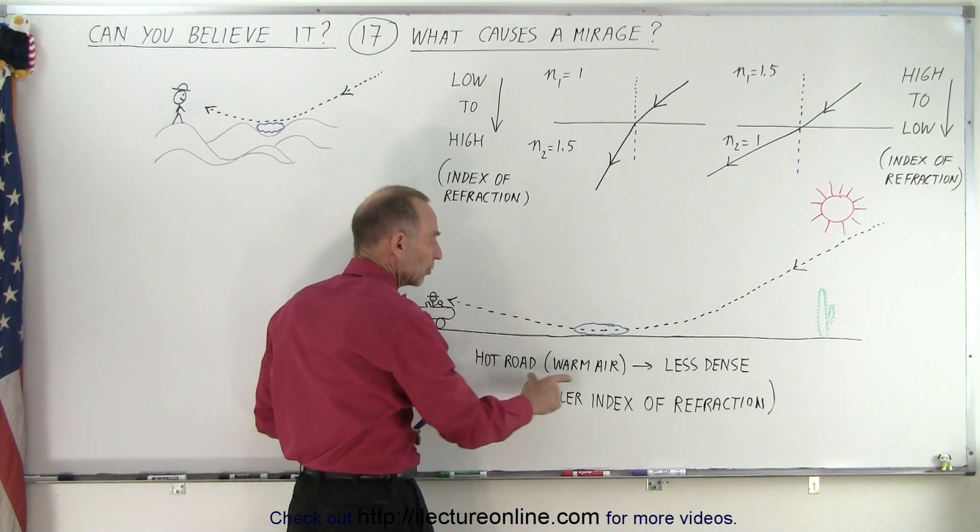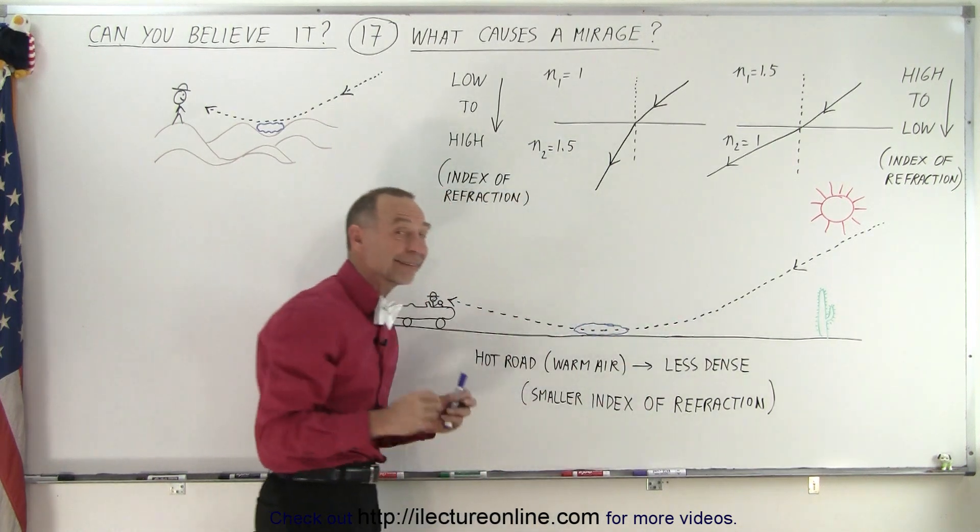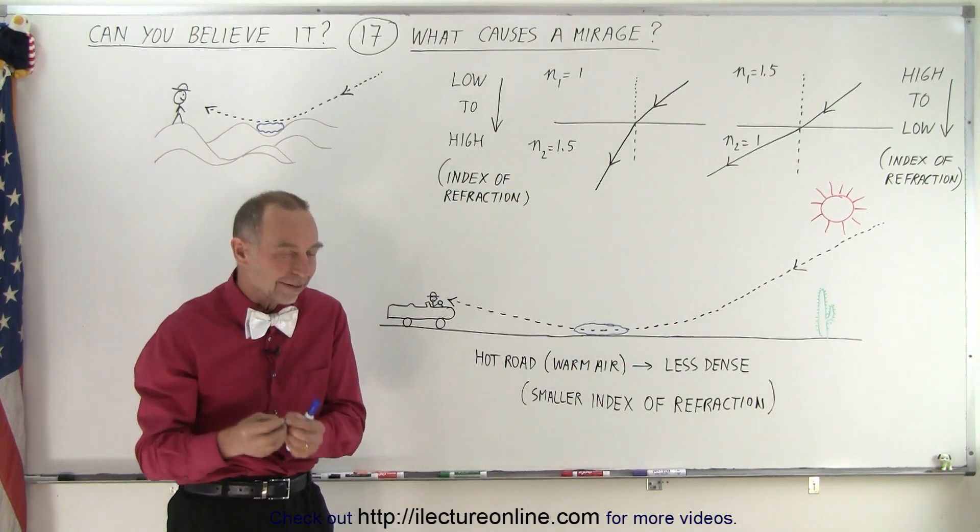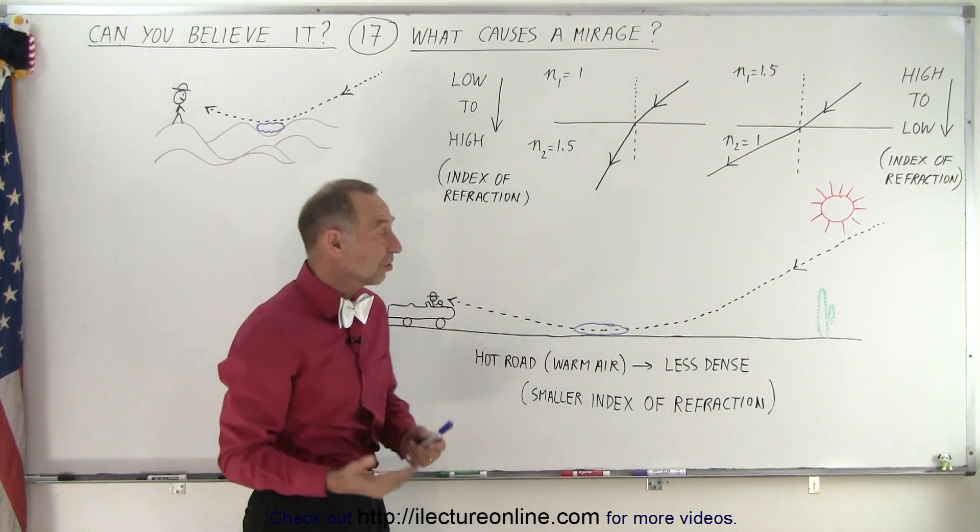This means that the air here is less dense, and air that's less dense has a smaller or lower index of refraction. So in this case,